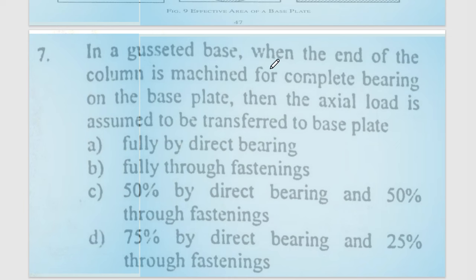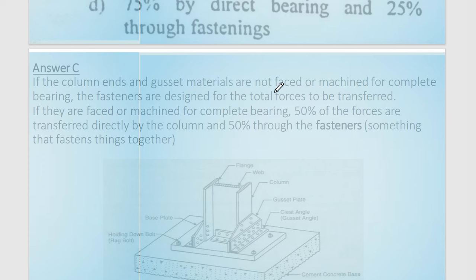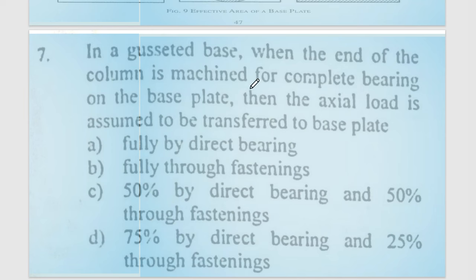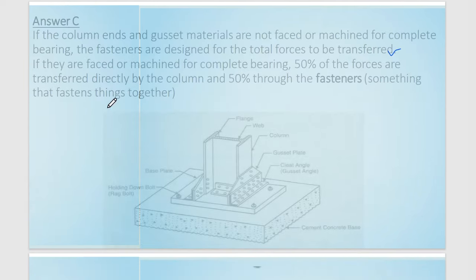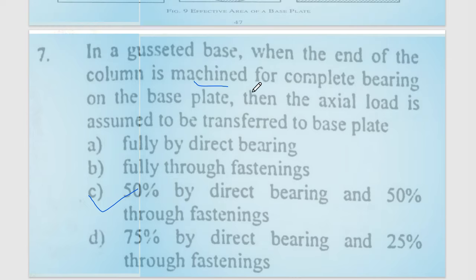Question number 7: in a gusset base, when the end of the column is machined for complete bearing on the base plate, the axial load is assumed to be transferred directly. If the column and gusset material are not faced or machined, the fasteners are designed for the total force to be transferred. If they are faced or machined, 50% of the force is transferred by direct bearing and 50% by fastening. Option number corresponds to the machined condition.